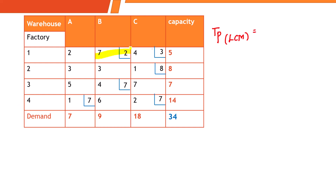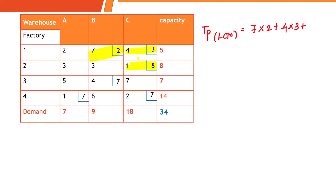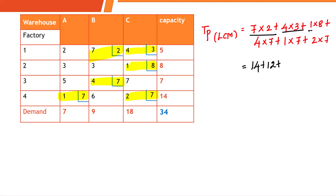Now calculate the total transportation cost using LCM: (7×2) + (4×3) + (1×8) + (4×7) + (1×7) + (2×7) = 14 + 12 + 8 + 28 + 7 + 14 = 83. The transportation cost using the LCM method is 83. I'm sure you were able to follow the concept — if you have any doubts please post them in the comment box. Thank you so much for joining me, see you in the next video!